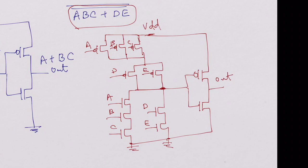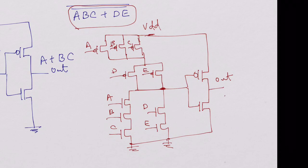And this is the output. Let me write it down here so that there is no confusion: ABC plus DE. This is the output we have here.